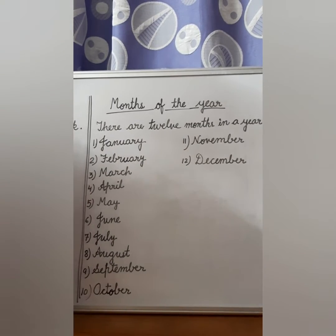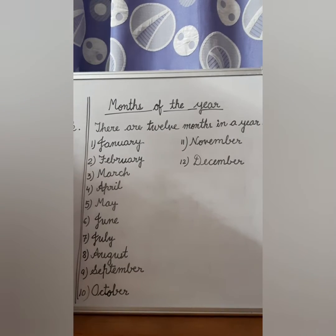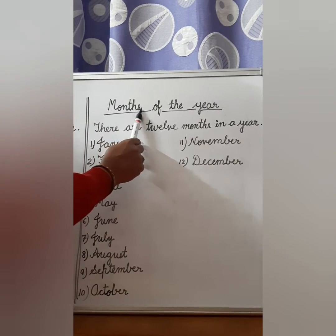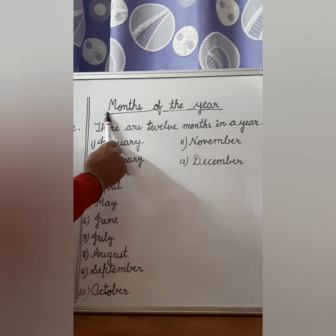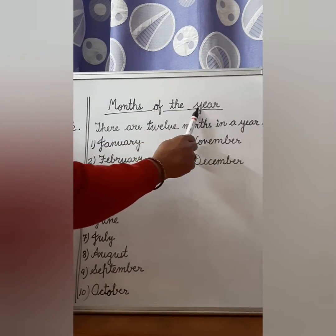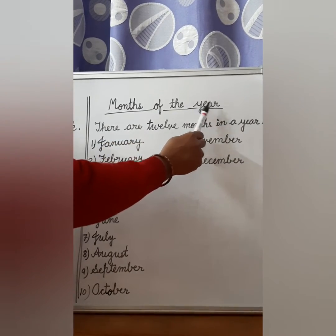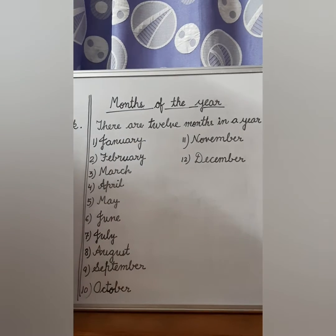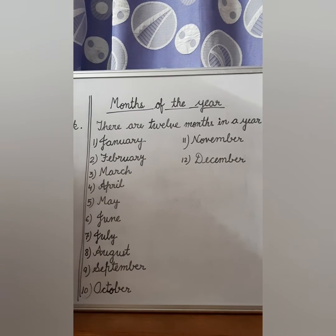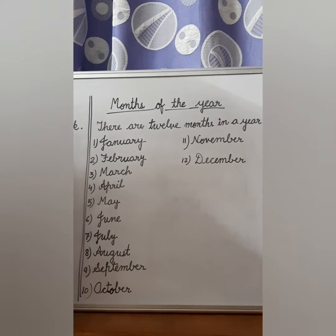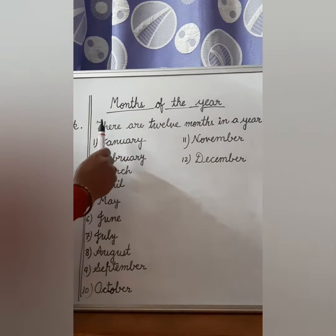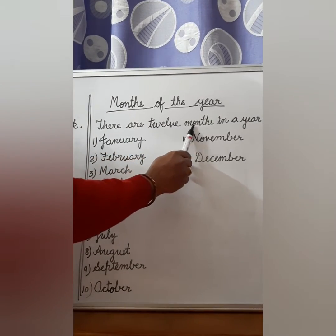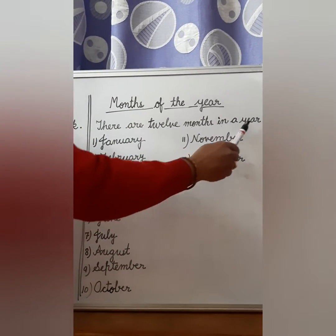Now children, turn the page and in the new page, write the heading M-O-N-T-H-S, months of the Y-E-A-R, year — months of the year. So how many months are there in a year? There are 12 months in a year.